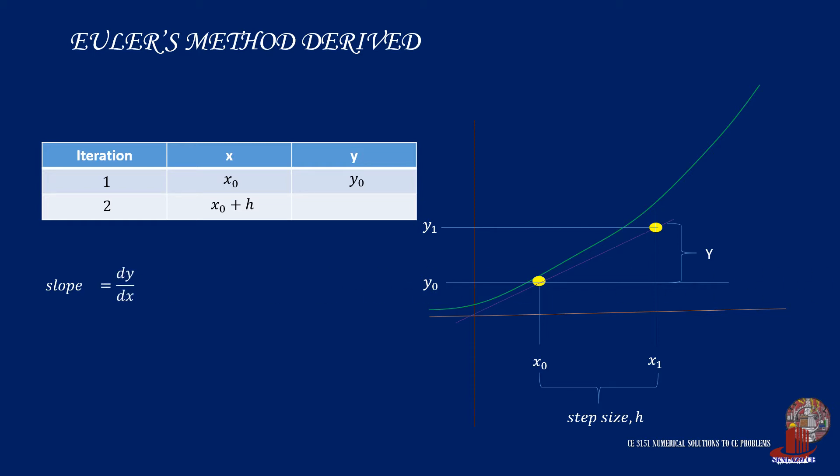It is noted that slope is rise over run. So with dy over dx as the differential equation itself, we can equate this with rise of y as shown and run of h. So y is then computed as the step size h multiplied by the differential equation.